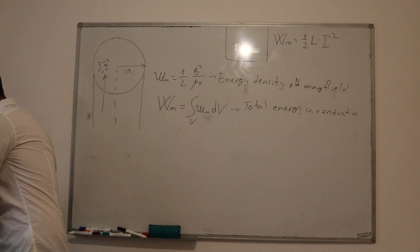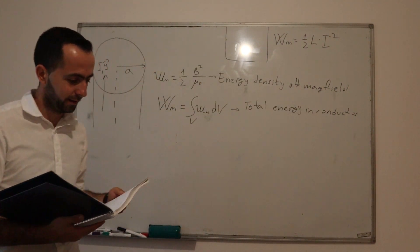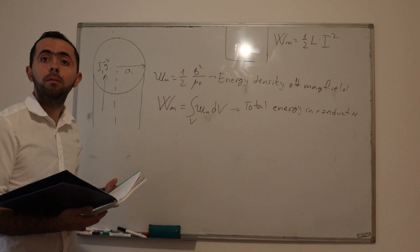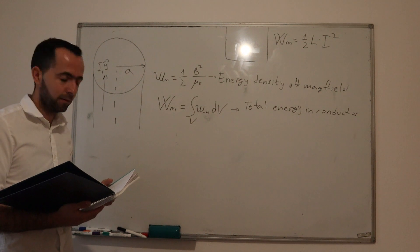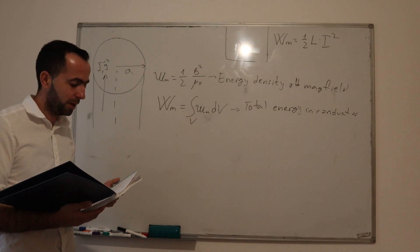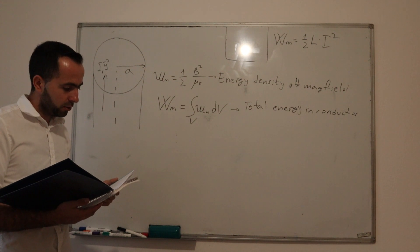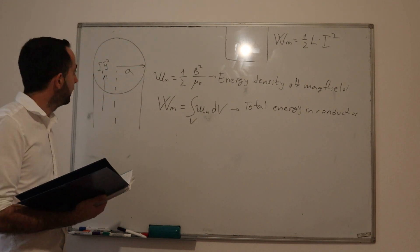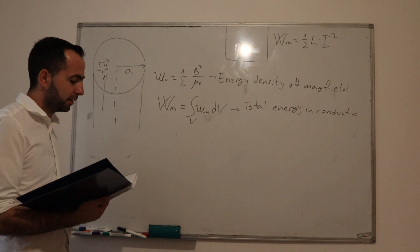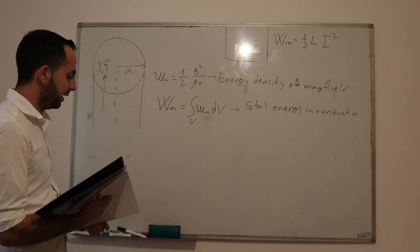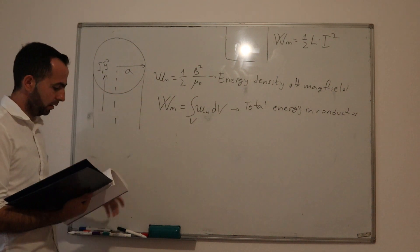Assalamu alaikum and greetings. Next task is inside the infinitely long conductor, where magnetic permeability is approximately the same as the magnetic permeability of air, with circle cross-section of radius A, there is constant current I. So we have our conductor with circle cross-section with the current I and the radius A.